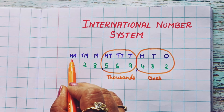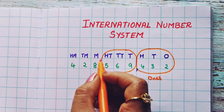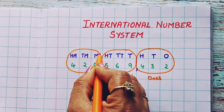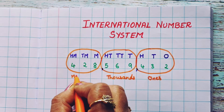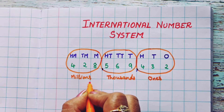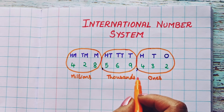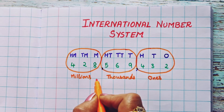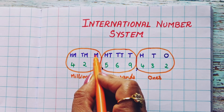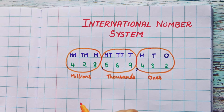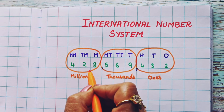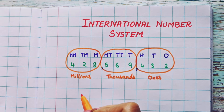Next, million, ten million, and hundred million — all these three fall under one group. Which group is this? The millions group. The numbers under one group will be read together.